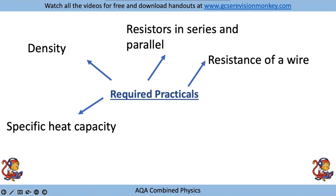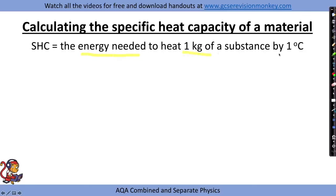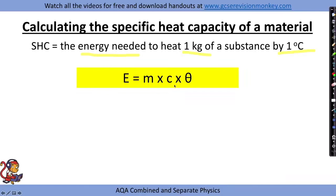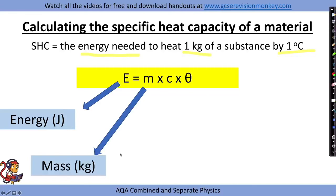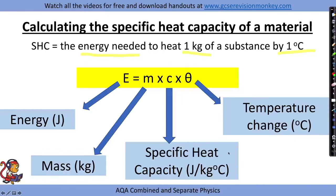The required practicals for physics paper one are: specific heat capacity, density, resistors in series and parallel, resistance of a wire, and IV graphs. In the specific heat capacity practical, you'll be calculating the specific heat capacity of a material - that's the energy needed to heat one kilogram of a substance by one degree C. The equation given on your data sheet is E equals m times c times theta.